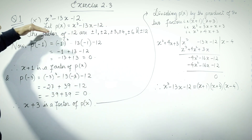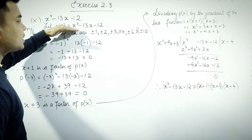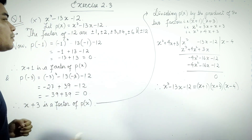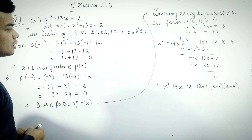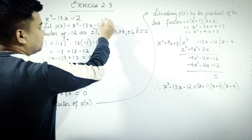Let p(x) equal x cubed minus 13x minus 12. The constant term is minus 12.